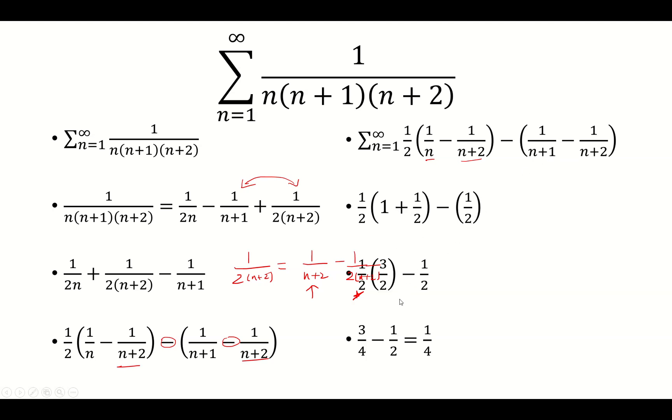So simplify. 1 plus 1 half is 3 halves. And then we get 1 fourth as our final answer.